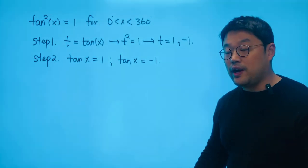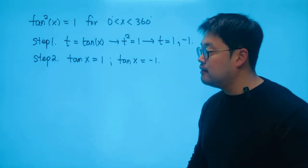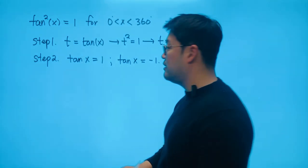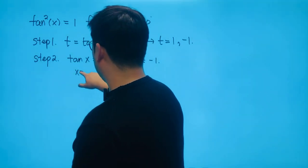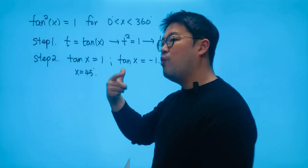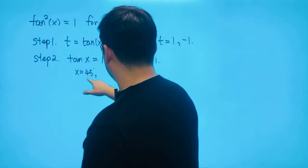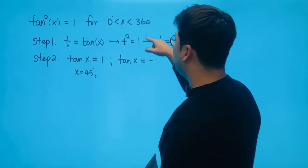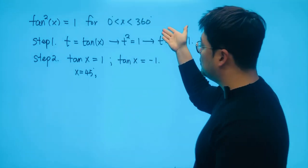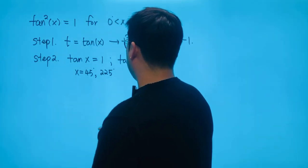So when do we get tangent x equals 1? When would the slope of the terminal arm become 1? Well, I would say x equals 45. Or another way to find it is rotate 180 degrees counterclockwise, because everything has to deal with positive angles. So we get 225 as well.